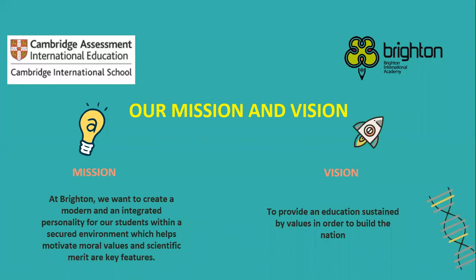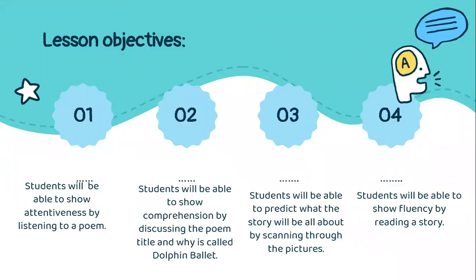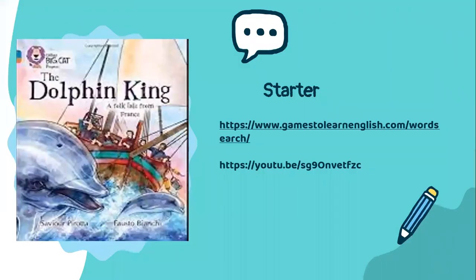Here at Brighton, this is our mission and vision. Remember, the value of the month is to respect. The lesson objectives for today — three and four — are that you will be able to predict what the story will be all about by scanning through the pictures, and you'll also be able to show fluency by reading the story.